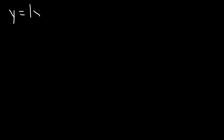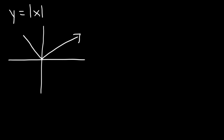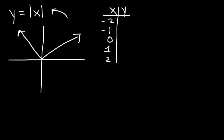In this lesson, we're going to talk about how to graph absolute value functions using transformations. This is the parent function of the absolute value of x — a graph that looks like a V pointing in the upward direction. To plot it using points, the center is 0. Choose two points to the right and two to the left, then plug in the numbers to find the y values. The absolute value of 0 is 0, of 1 is 1, of negative 1 is positive 1, and of negative 2 is positive 2. Plot those points and you get a V-shaped graph.